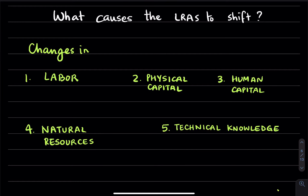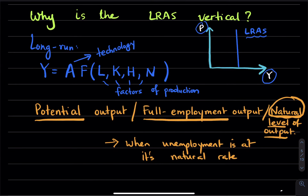Talking about the long-run aggregate supply further, we can see what causes it to shift. Notice the aggregate supply curve is a vertical line — it is not affected by the price level because in the long run you have monetary neutrality. So the only movement is either to the left or to the right.